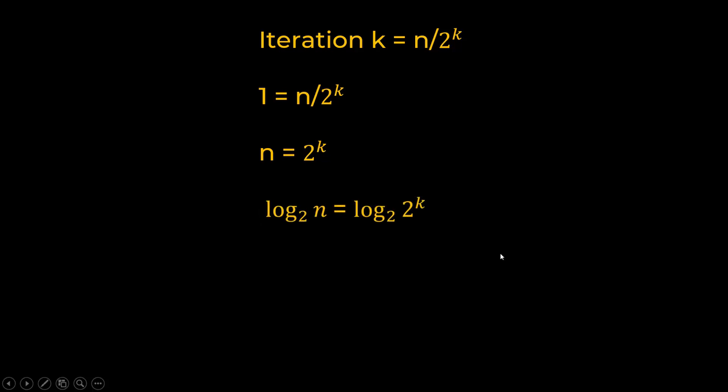Now you know that this right hand side equation you can represent as k × log 2 base 2. Now log n base n is 1, so this part becomes 1. Hence my k, which is the number of iterations that I need, is log n. Hence the complexity of binary search is order of log n.